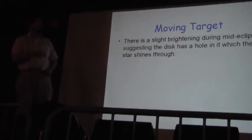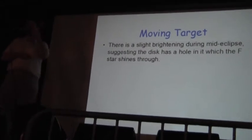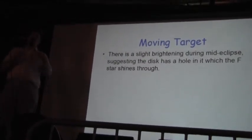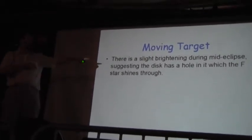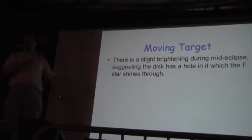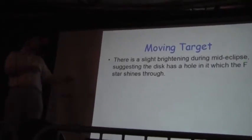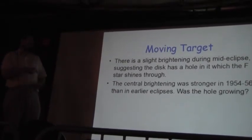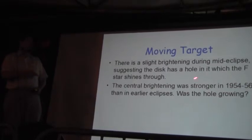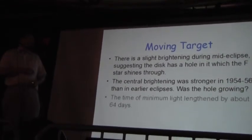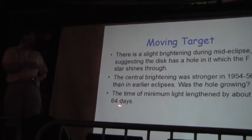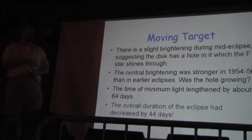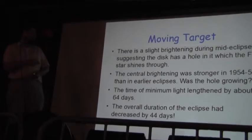Okay, so I have a partial data set from the last eclipse that I haven't actually, unfortunately, had time to update. I will be able to show you that the whole feature produced in the light curve by the whole of the disk. The central brightening was first noticed in the 1954-56 eclipse, and it's been growing larger, as far as we can tell. The time of minimum has been growing, so the disk may be growing, and the overall duration of the eclipse has gotten bigger by 44 days.